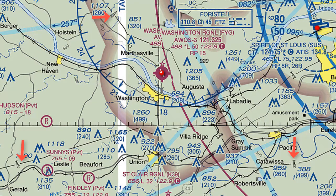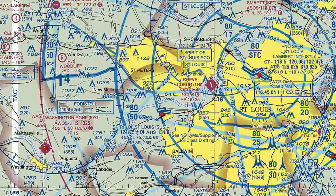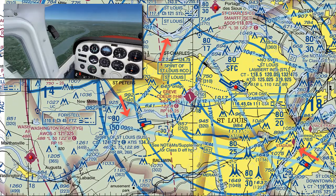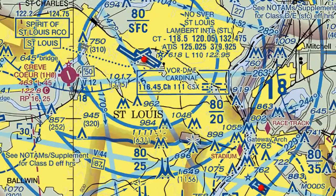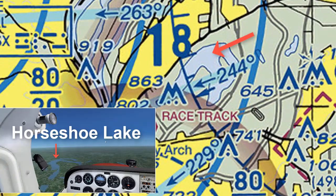Power transmission lines are also depicted, as we can see here. Although smaller streams and rivers can be difficult to pick out, a larger river such as the Missouri and the Mississippi can be helpful, as seen here on the map. Larger bodies of water are also great to pick out — here's Horseshoe Lake, for example.